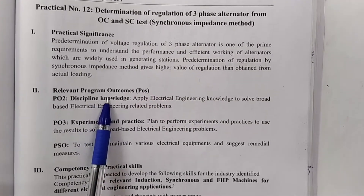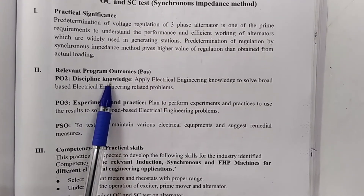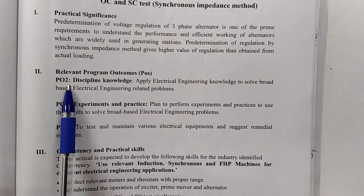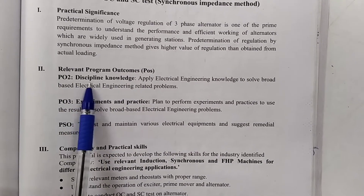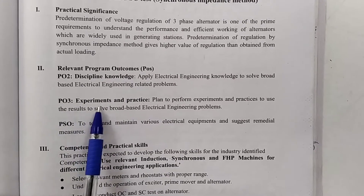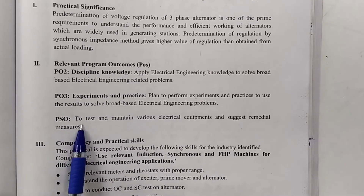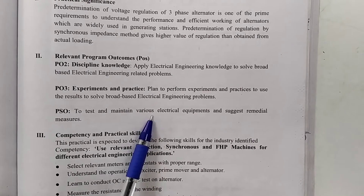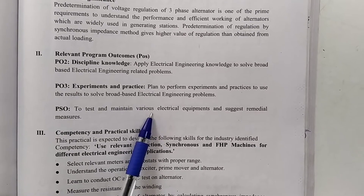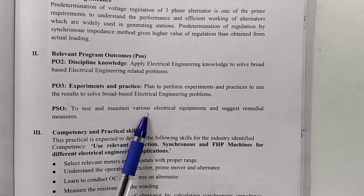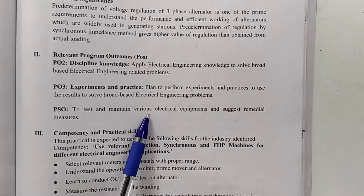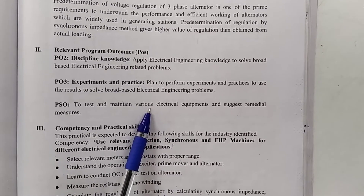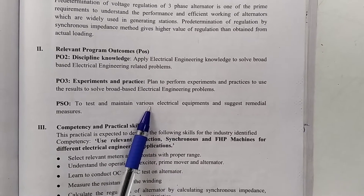Relevant program outcomes: students will be able to achieve PO2 discipline knowledge, PO3 experiment and practice, and PSO to test and maintain various electrical equipment. In this practical, students use a rectifier, alternator, and DC shunt motor as a prime mover and maintain its various parameters.